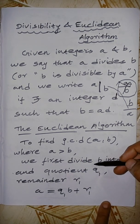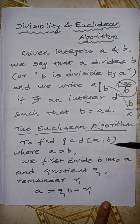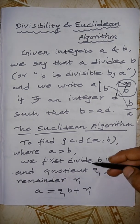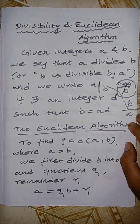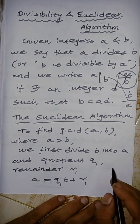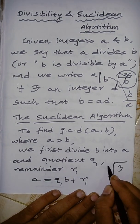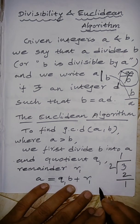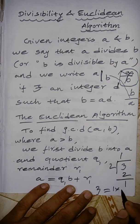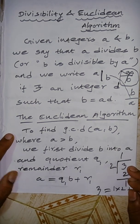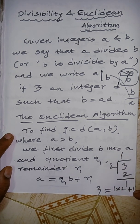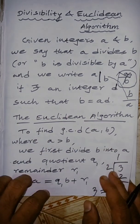We first divide the larger number A by B, getting quotient Q1 and remainder R1, so A = Q1·B + R1. For example, take 3 and 2: 2 goes into 3 once with remainder 1, so 3 = 1×2 + 1. Here 3 is the dividend, 1 is the quotient, 2 is the divisor, and 1 is the remainder. This process is then repeated.